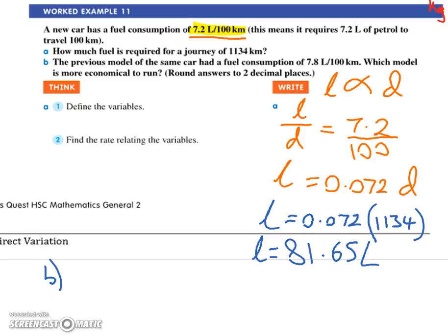I'm just going to get you to ignore that for a sec. I've got a car that's 7.2 liters per 100 kilometers. I've got a car that's 7.8 liters. Which one's more economical? 7.2? Why? It uses less petrol per 100 kilometers.